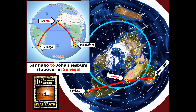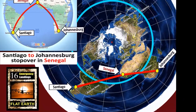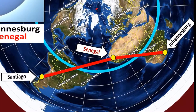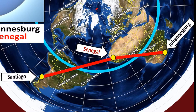It's because the Earth is flat. There's no way for this flight to fly all the way through, with the exception of a specially adapted aircraft with extra fuel tanks. Otherwise, they have to make a stop in Senegal, Africa, and then go over to Johannesburg.